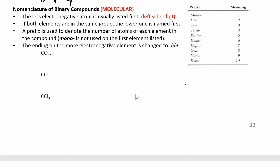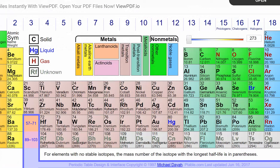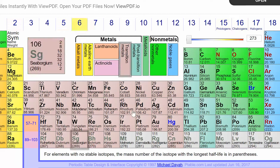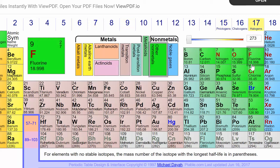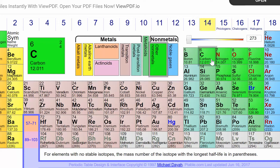Now we can start naming molecular compounds, or binary compounds. Remember how we had ionic compounds where we had a metal and a non-metal — that was ionic. Now we're going to deal with just molecular compounds, which are just non-metals. Things like carbon monoxide, carbon dioxide, or dinitrogen pentoxide.